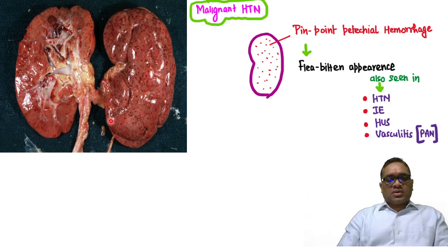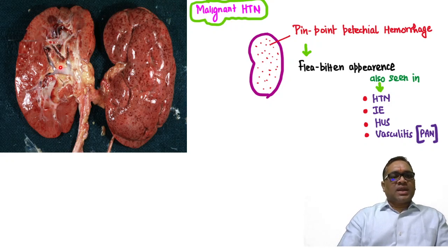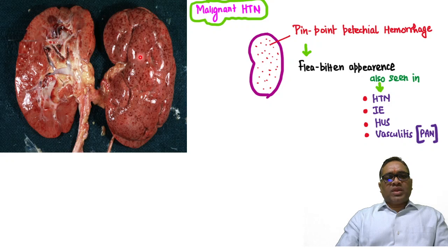You are seeing a gross specimen of the kidney. This is the external surface, this is the internal surface, and on both places you can see there are small pinpoint petechial hemorrhages.